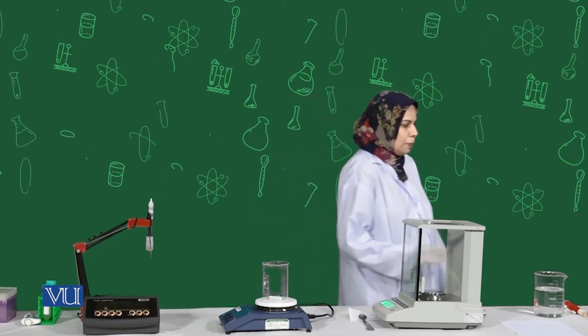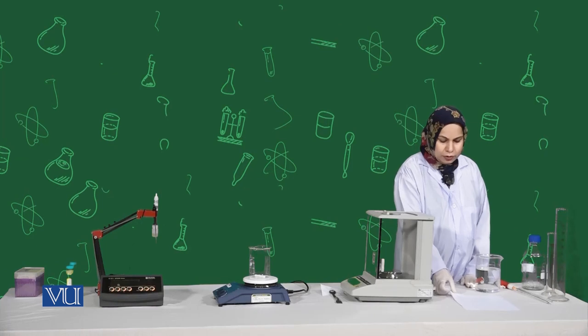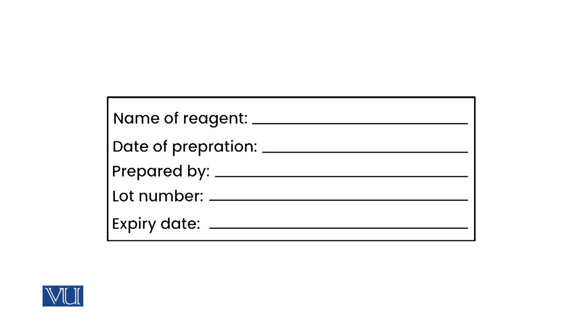A solution is a mixture of one or more solutes in a solvent. Before going to preparation, I would like to introduce certain precautions and procedures. For example, while measuring liquid reagents, we should use narrow neck apparatus like measuring cylinders, and they should be properly labeled with a tag mentioning the name of the reagent, date of preparation, the initials of the person who prepared the solution, lot number, and expiry number.